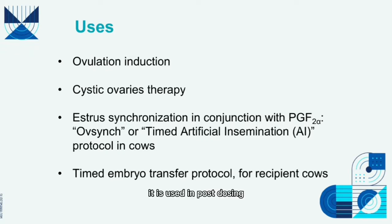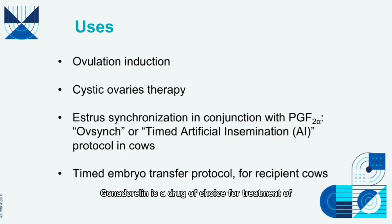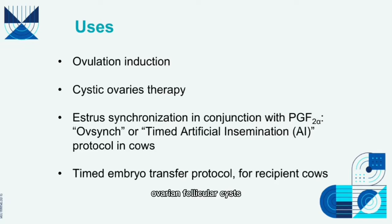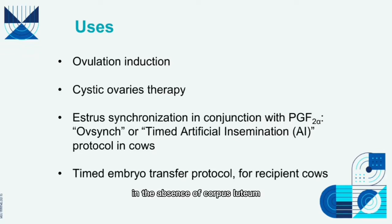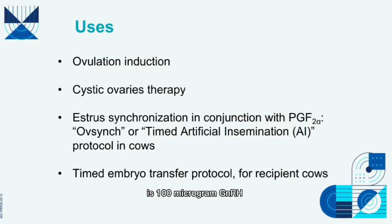Gonadorelin is used in pulse dosing to induce estrus in dogs and cats with prolonged anestrus, and has also been advocated for treatment of stallions with lowered libido. Gonadorelin is a drug of choice for treatment of ovarian follicular cysts in cattle and camelids. Ovarian follicular cysts in cows are defined as follicle-like structures more than 25 mm in diameter that persist rather than ovulate, present for 10 days or more in the absence of corpus luteum, and are more frequent in postpartum dairy cows. The first choice for treatment is 100 micrograms of GnRH, which generally results in luteinization of the cystic structure with estrus occurring in 18 to 23 days.